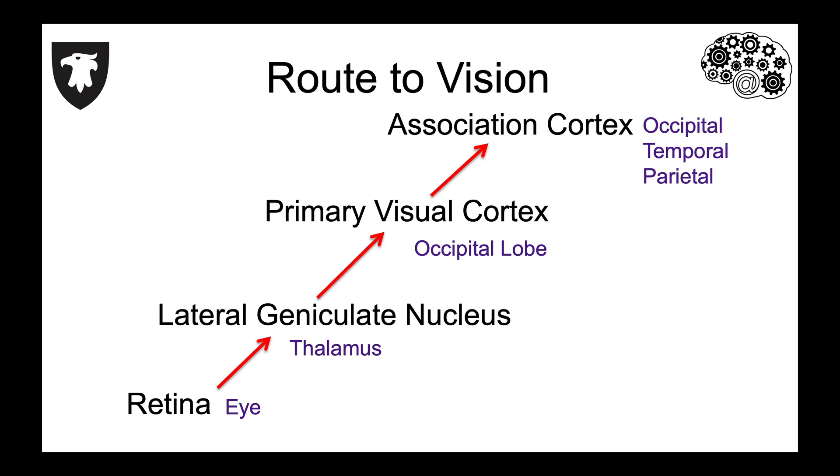This area is necessary for conscious visual perception, and it projects to association cortex in the occipital, temporal, and parietal lobes. These areas integrate visual perceptions with other types of information for more complex tasks, such as identifying objects and using vision to guide motion.